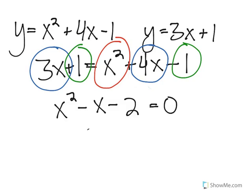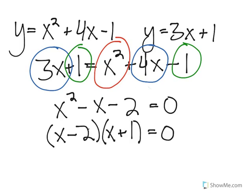Here we have a quadratic equation. After combining all terms, set equal to 0, and this we can factor. The factors are x minus 2 and x plus 1. So the solutions are x equals 2 and x equals negative 1.